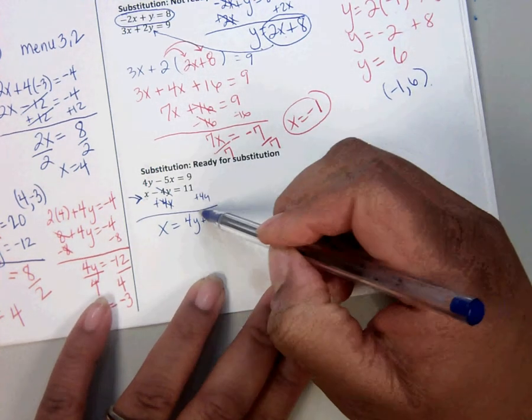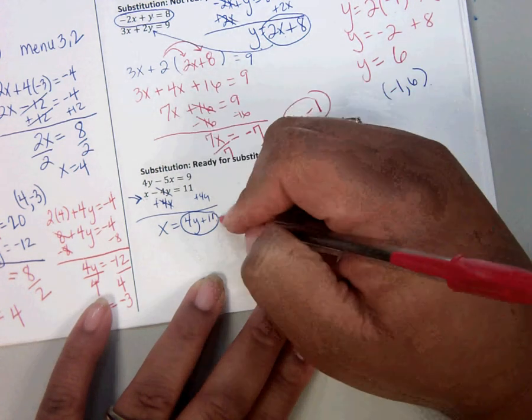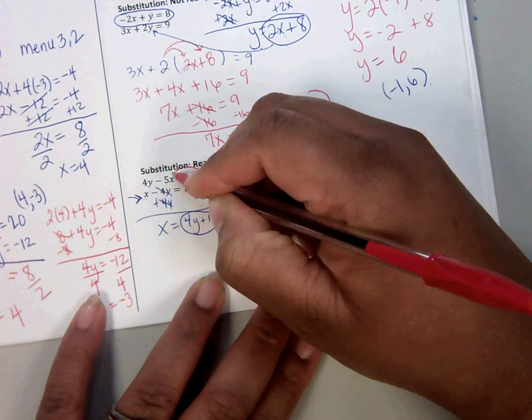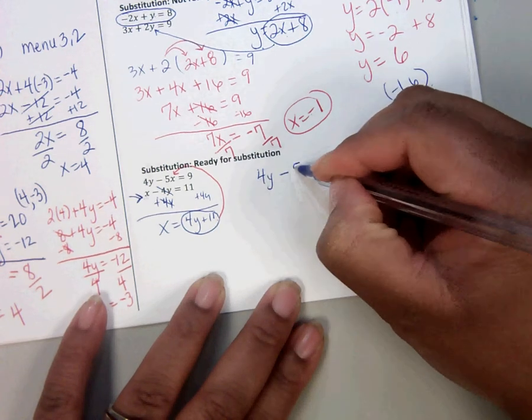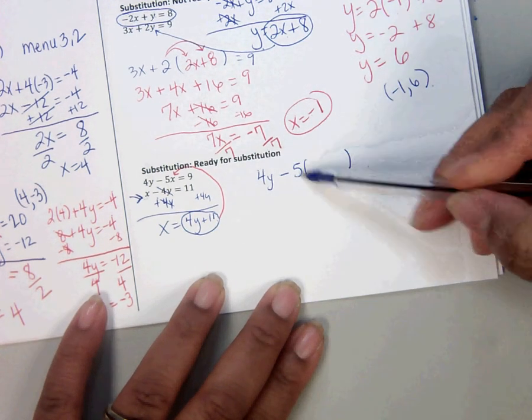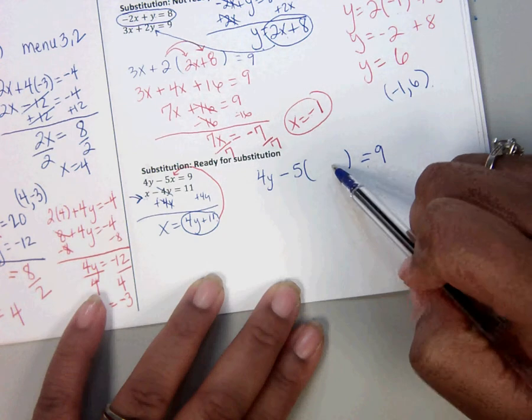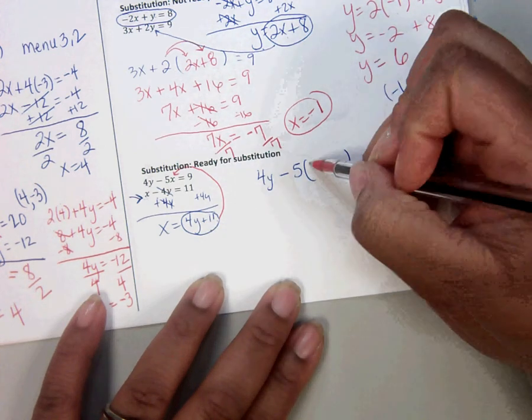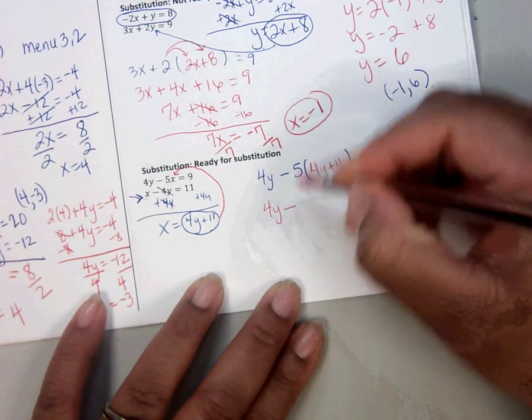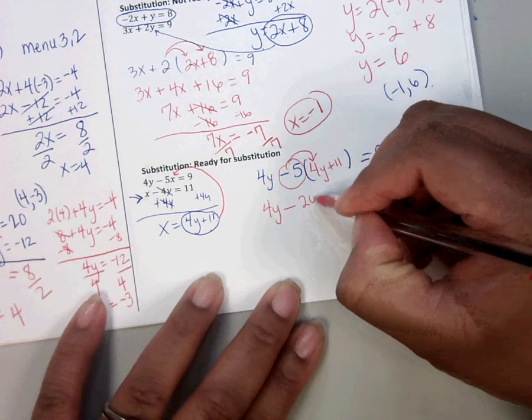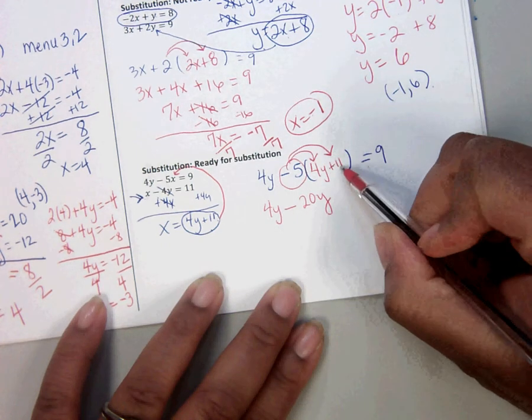So now this is what x equals. Where do I put this? In the other equation. So now we have 4y minus 5, put a parenthesis for something that's going to go there, equals 9. Now what goes in here? The x. 4y plus 11. So this is 4y minus. And you have to distribute. 20y. And then a negative 5. That's going to be positive 11.